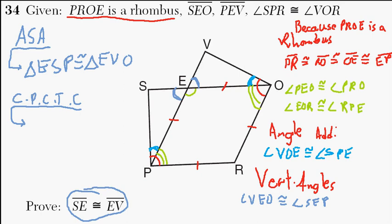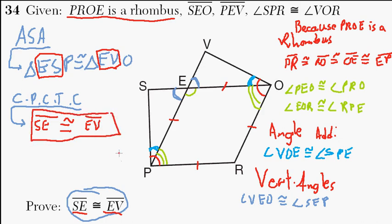And you can see it in the way that it's written right here. ES and EV. Here's SE and EV. But the order of letters in this case doesn't really make a difference because ES is the same as SE. So, there you have it by corresponding parts of congruent triangles. SE, that segment, is congruent to segment EV. And we are done. Thank you.